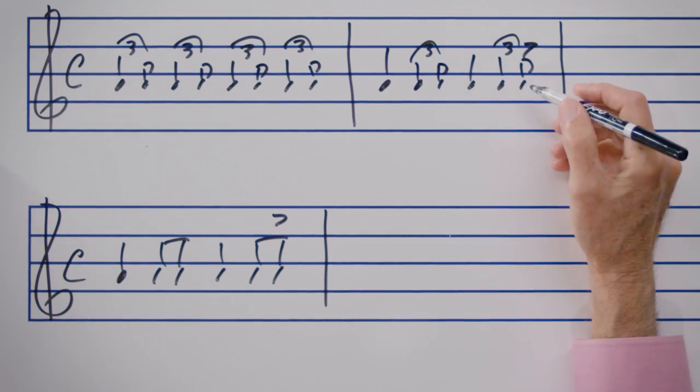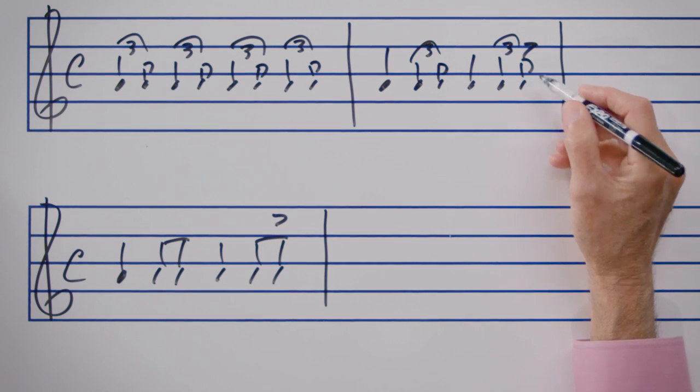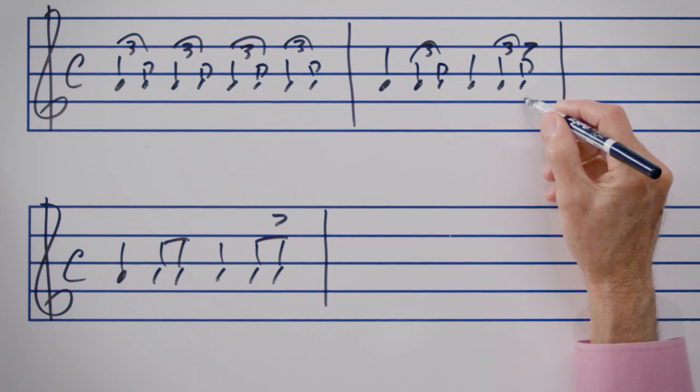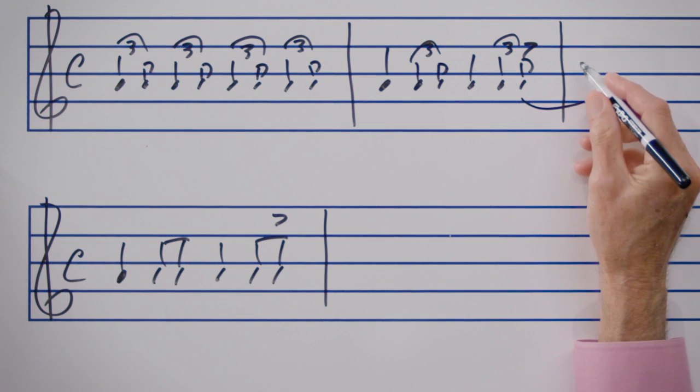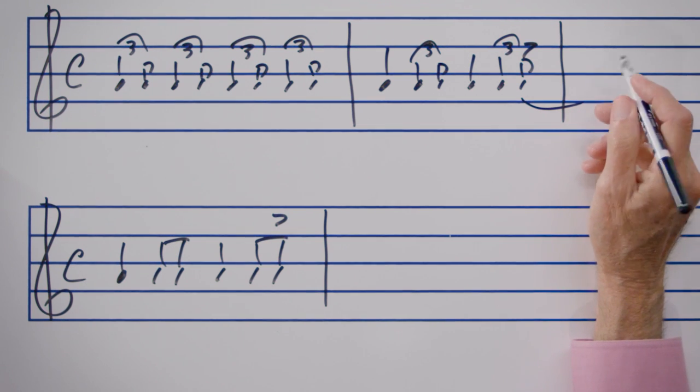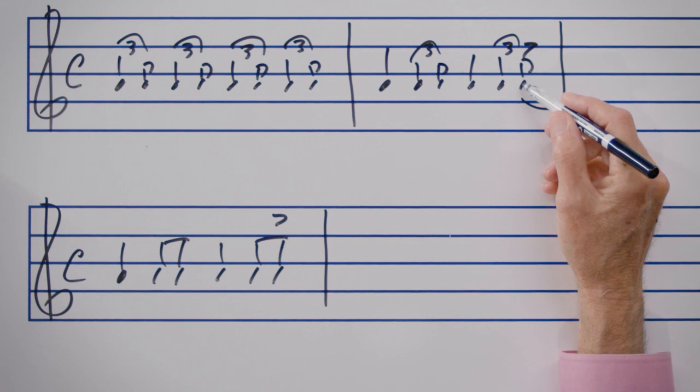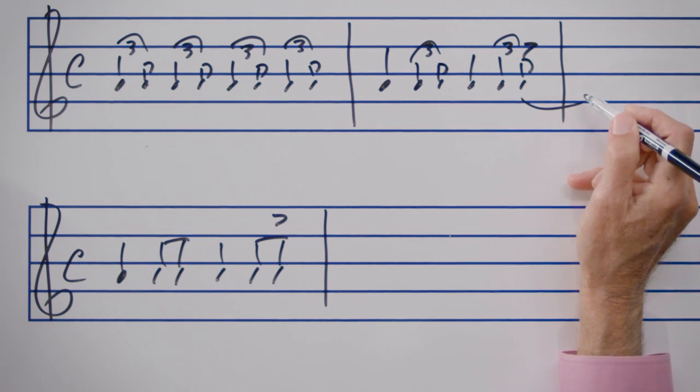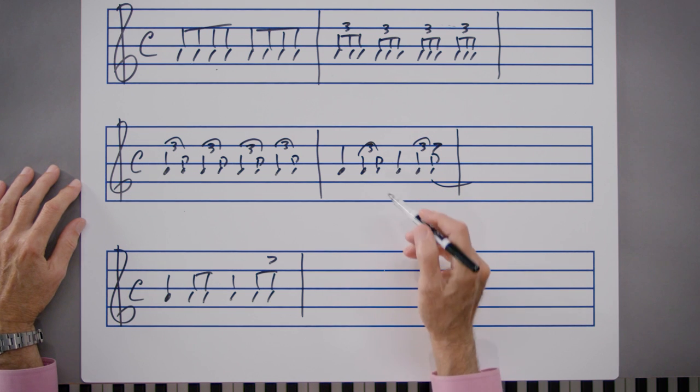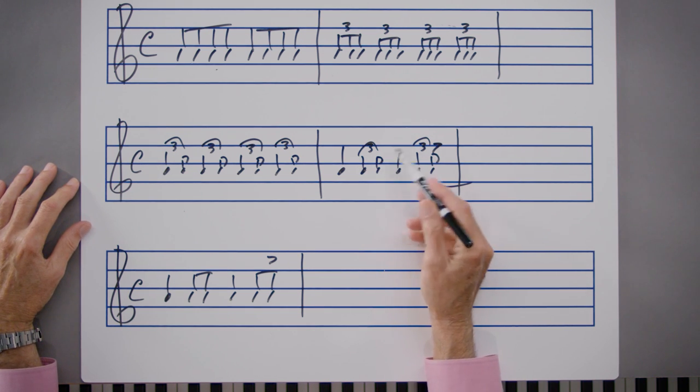Notice that the last eighth note under beat four is actually an anticipation of what would be beat one of the following measure. But this is the short anticipation, meaning that the eighth note here is not tied to any duration following. This notation is reasonably accurate, but you generally do not see swing eighth notes notated this way.